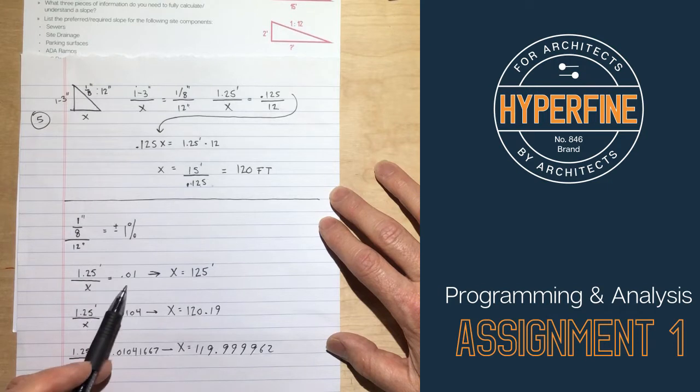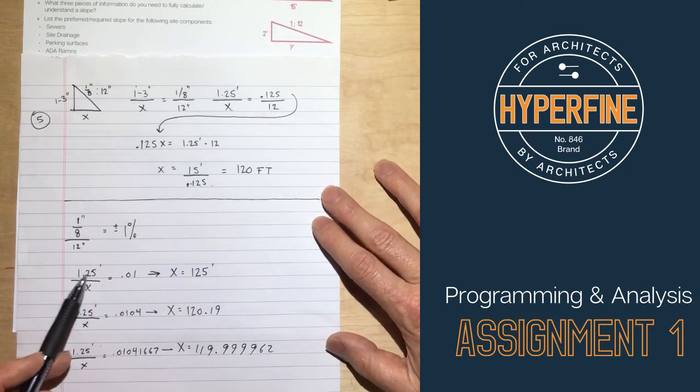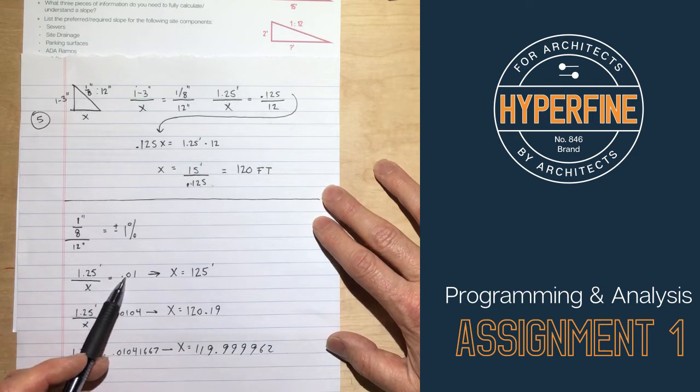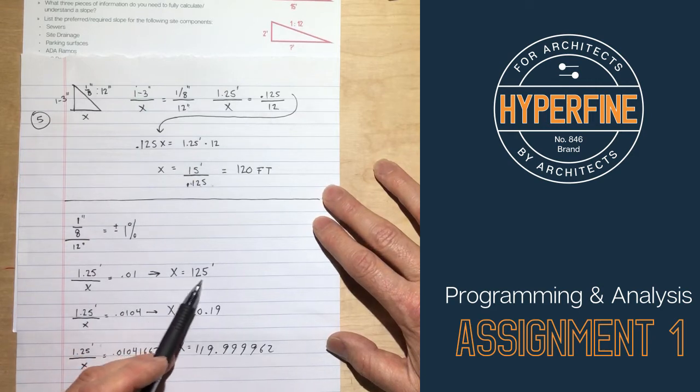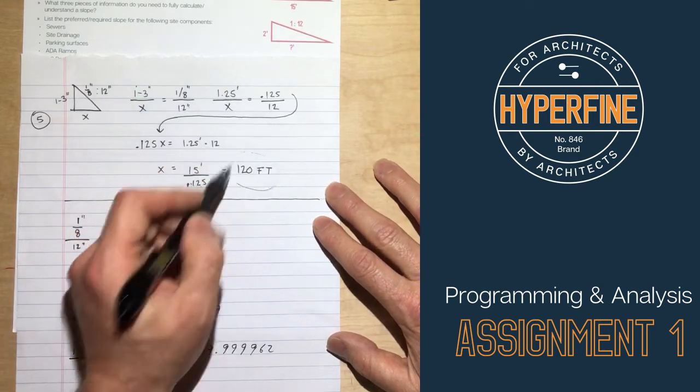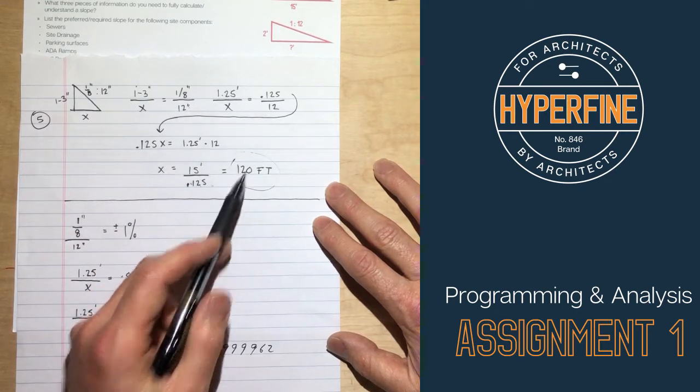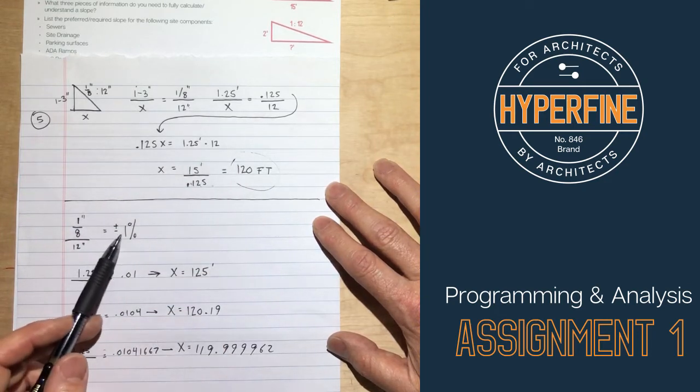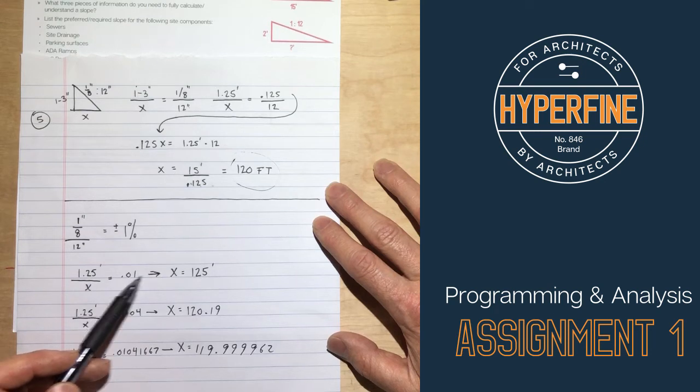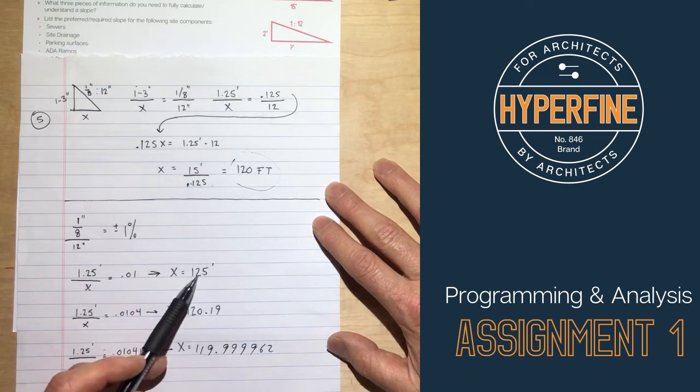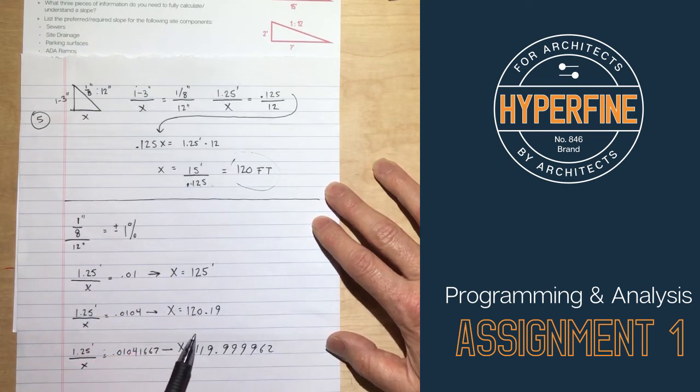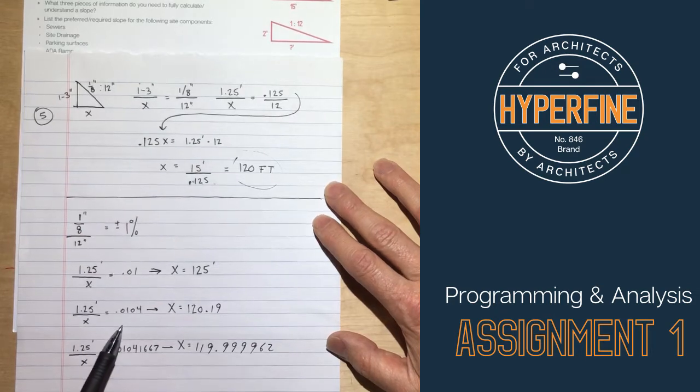So if we did the math with, if we just rounded at the beginning and said, okay, that's 1% slope, then 1.25 over x at a 1% slope, x would work out to 125 feet. We know the answer. So we proved the answer is 120 feet, but if we rounded early and just used 0.01, our answer would work out to 125 feet, which is 5 feet off.